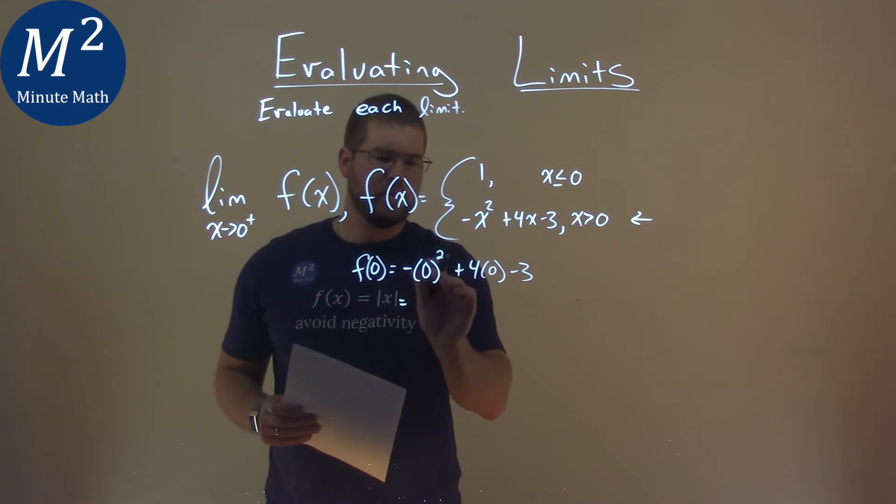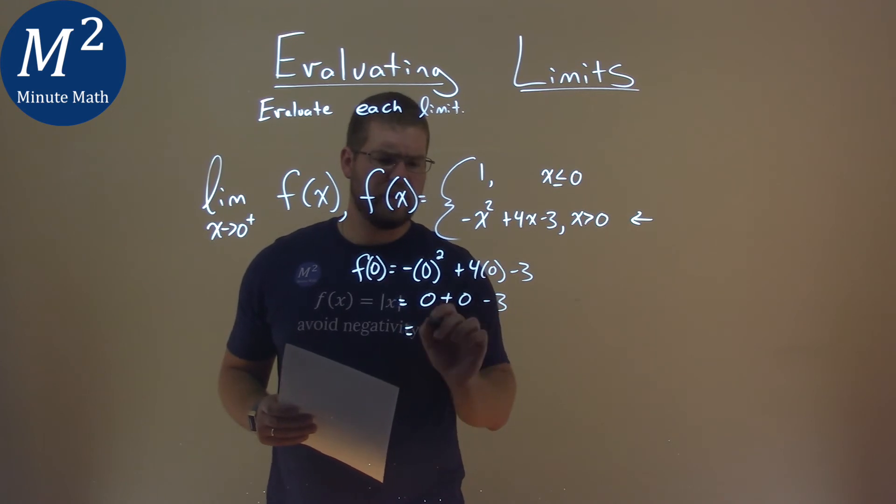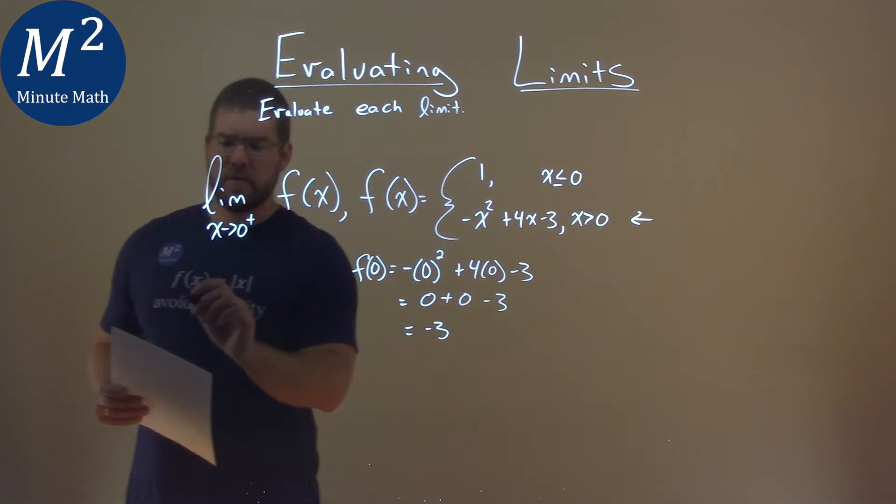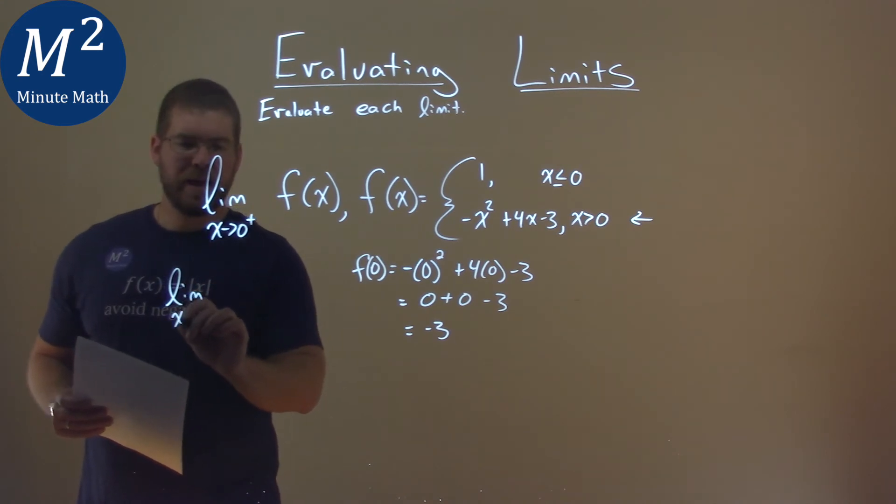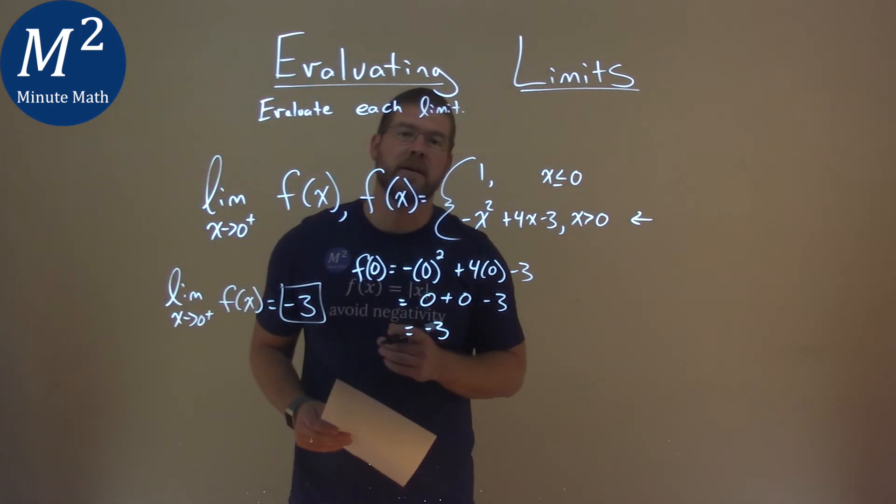Well zero squared is zero, don't need anything there. Four times zero is zero and we have minus three. Minus three is just left over. So what that tells us is that the limit as x approaches zero from the right of f of x is equal to negative three. And that is our final answer.